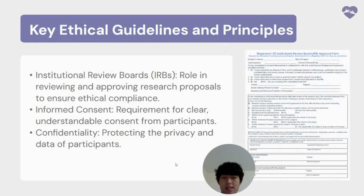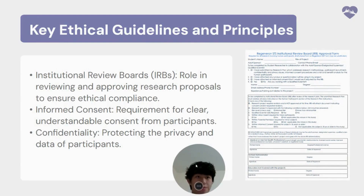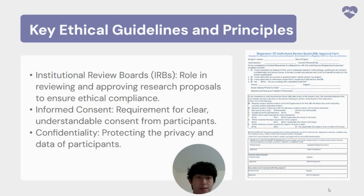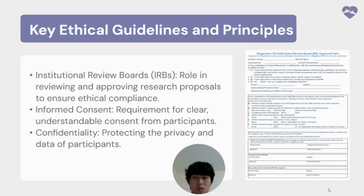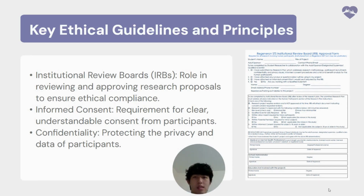Moving on to the key ethical guidelines — on the right is the regional STS IRB form. There's also one for ISEF, but the STS one is shown here as it looks cleaner. There are many different levels of IRB: a faculty or university-level IRB, and also a school-level IRB, depending on your situation. IRBs are important because of their role in reviewing and approving research proposals to ensure ethical compliance. The IRB also ensures the privacy and data protection of participants — it's like a contract between you and the scientific review board.